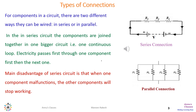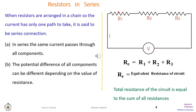In a series circuit, components are joined together in one big continuous loop. Electricity passes through the first component, then the second, then the third, and so on. The main disadvantage of this type of connection is that if any one component malfunctions, the entire circuit stops. The figure shows how current flows through R1, then R2, then R3, because all the resistors are connected in series.